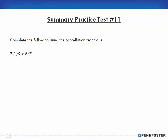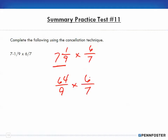Number 11: complete the following using the cancellation technique. I have seven and one-ninth times six-sevenths. The first thing is that this is a mixed number, so I need to convert it into a fraction: nine times seven is 63, plus one is 64, over nine — times six-sevenths. Now everything is in fractions, so I can cancel: three goes into six twice, three goes into nine three times. I multiply across: two times 64 is 128, and three times seven is 21.